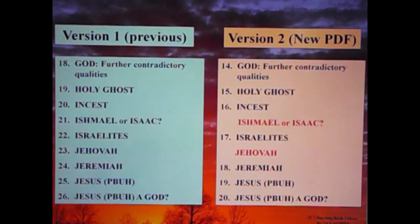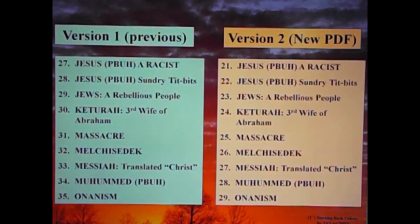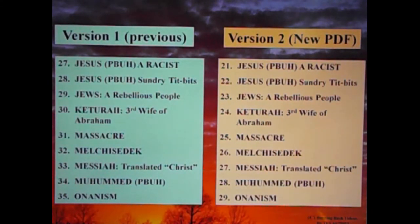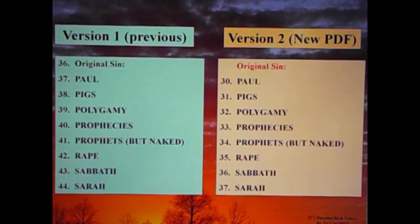Israelites. Again, Jehovah is not in the new PDF. Jeremiah. Jesus, peace be upon him. Jesus, peace be upon him — a God? Jesus, peace be upon him — a racist. Jesus, peace be upon him — sundry titbits. That is exactly the way it's spelled. Jews, a rebellious people. Keturah, third wife of Abraham. Massacre. Melchizedek. Messiah, translated Christ. Muhammad, peace be upon him. Onanism. Original sin is not covered in the new PDF.